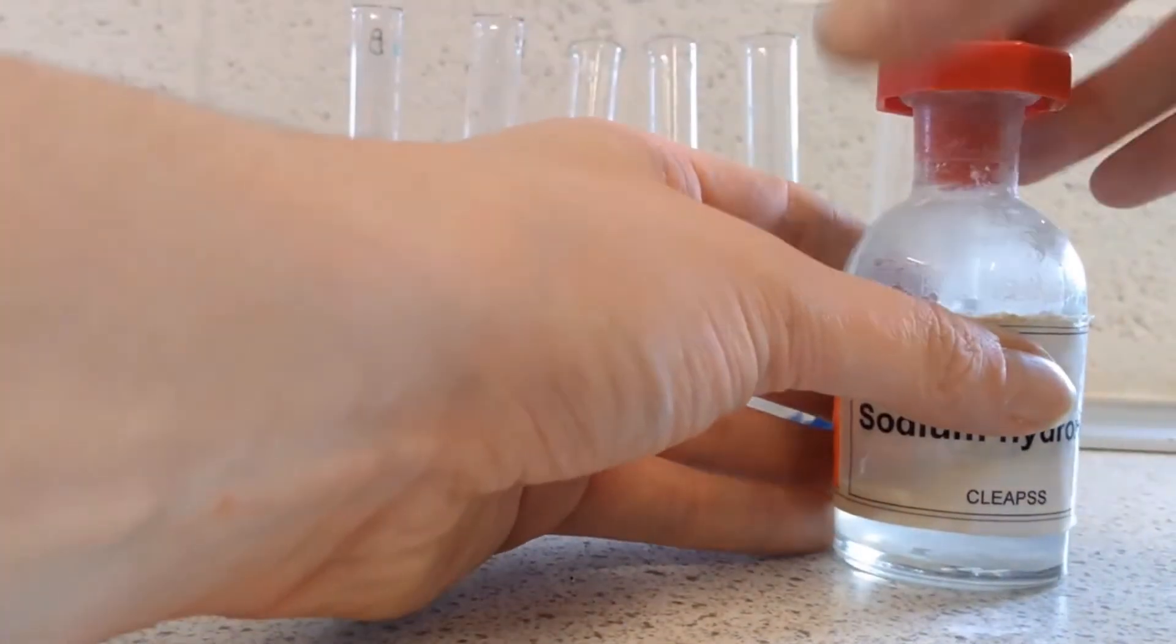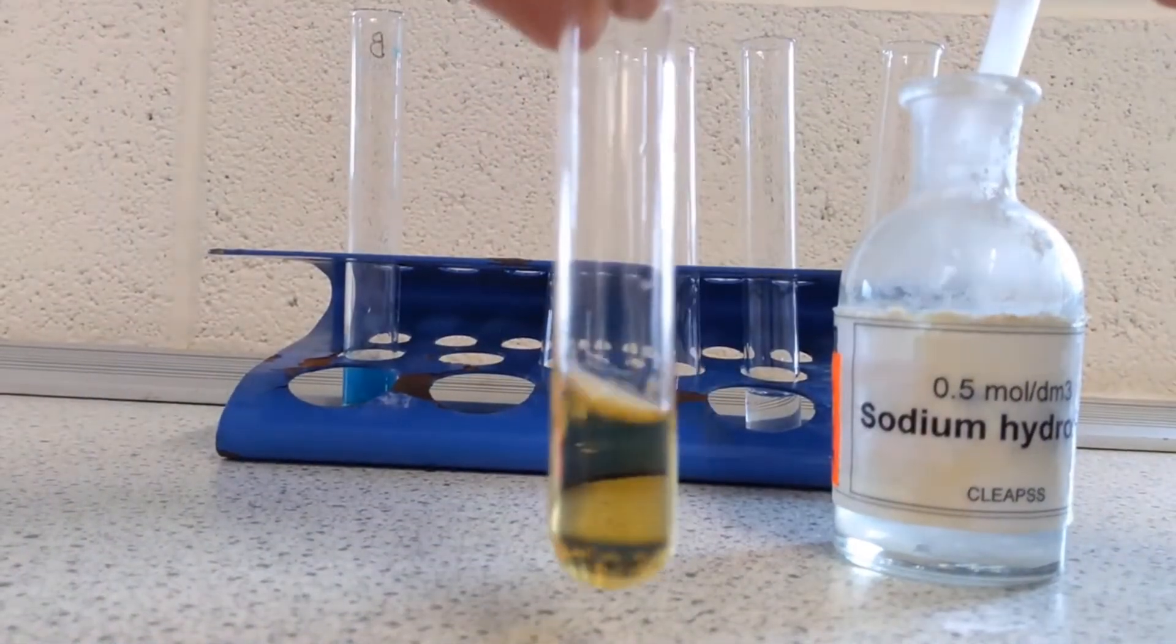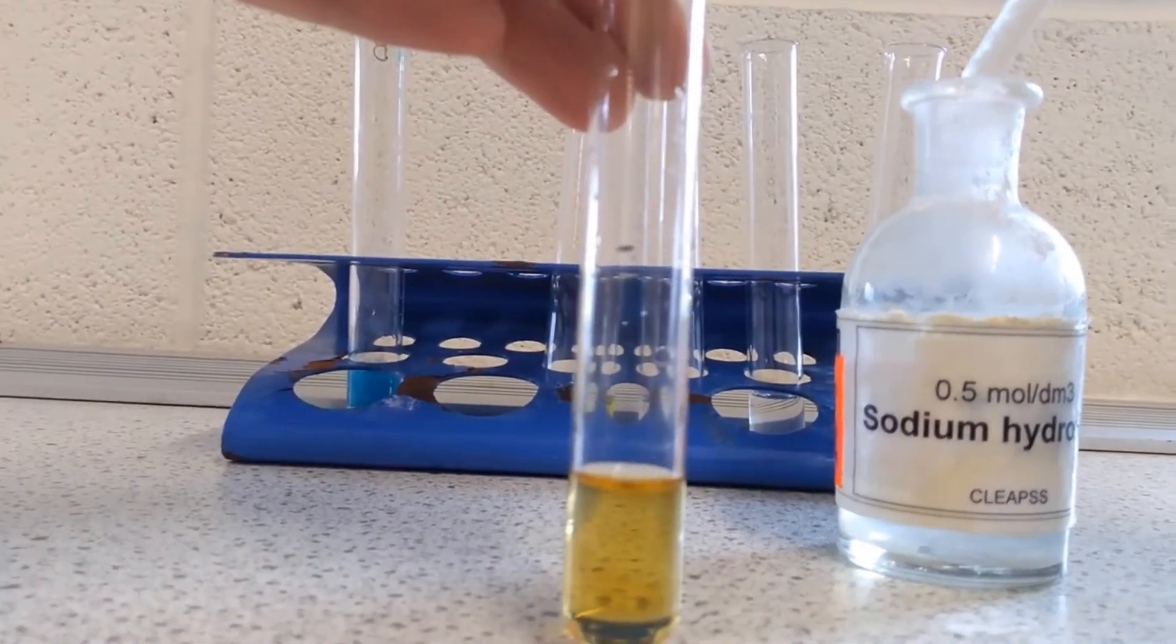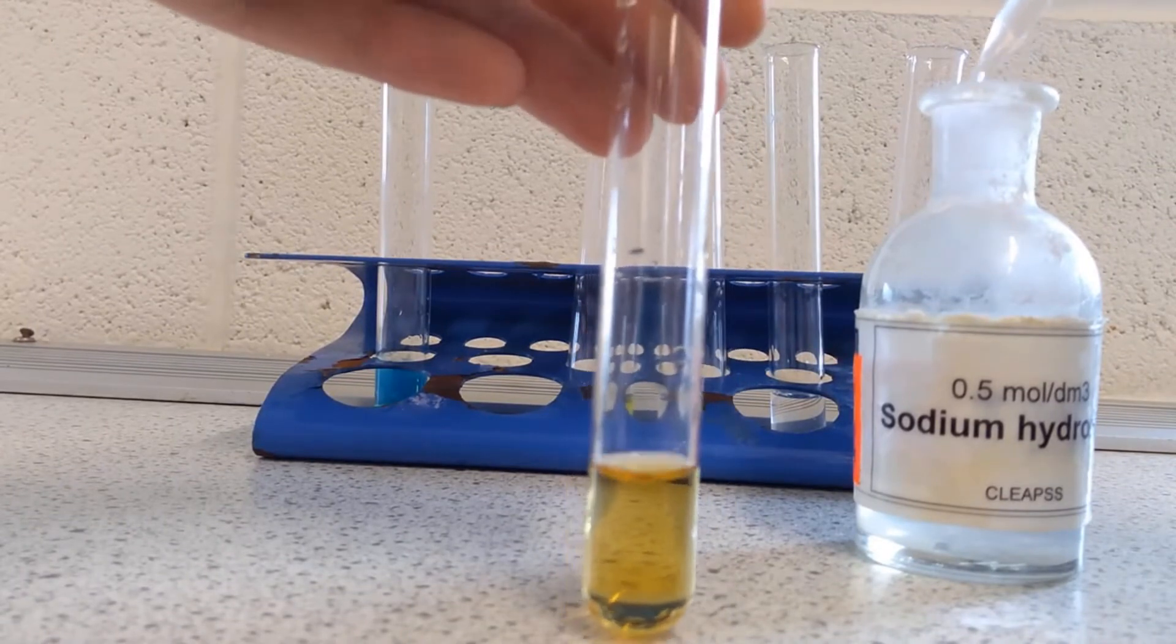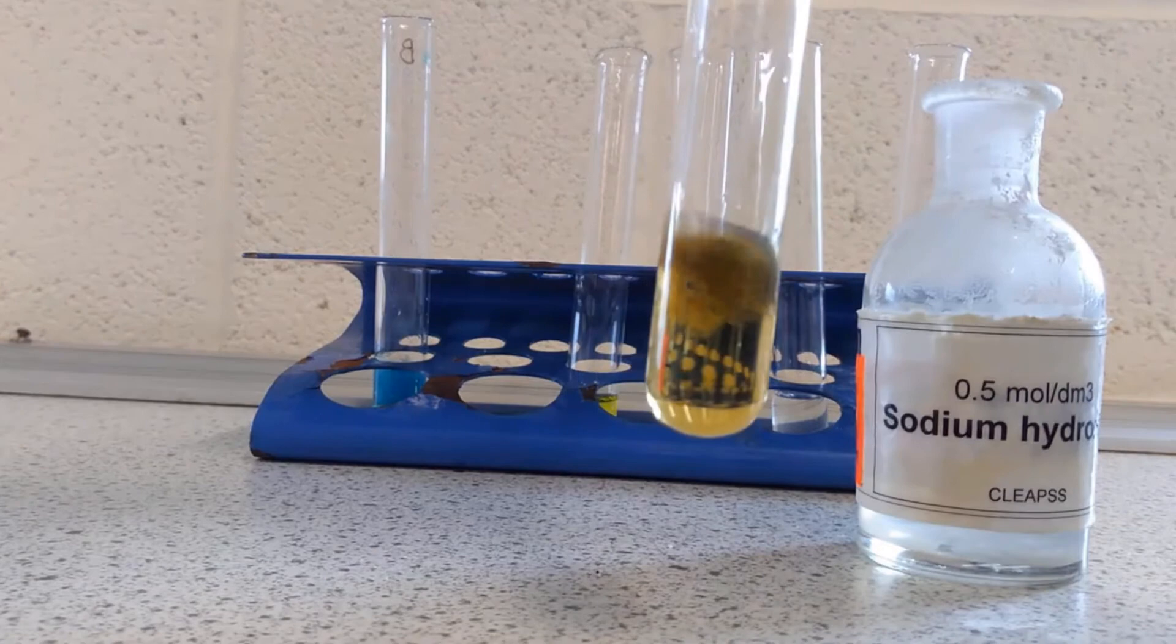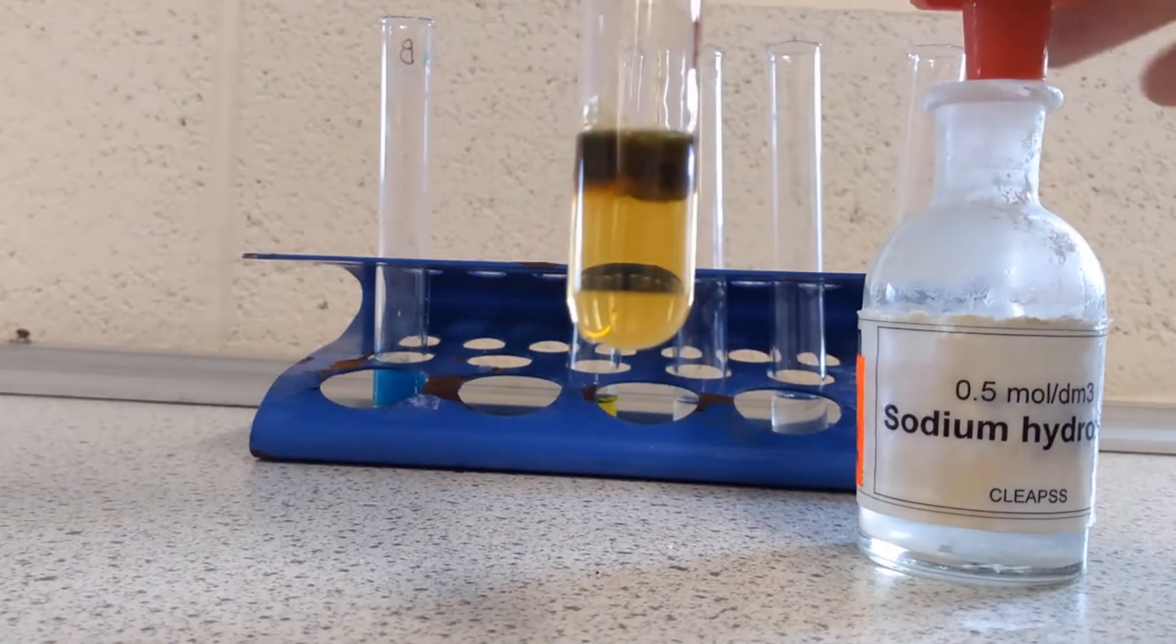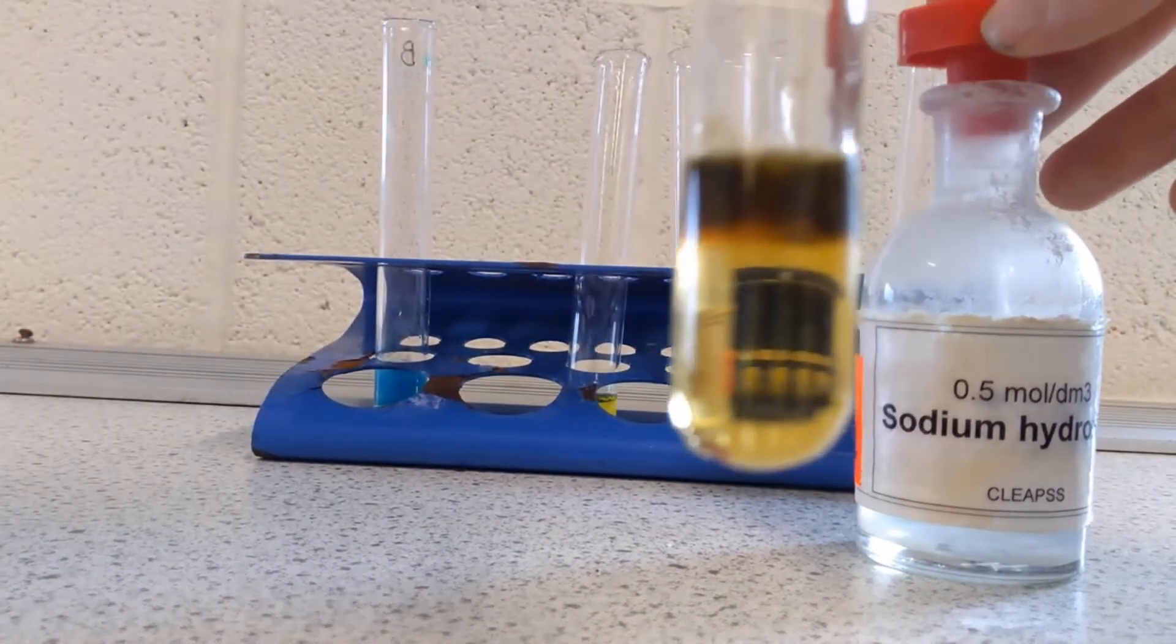And then likewise this next one is iron 2 plus ions, because remember, iron being a transition metal has multiple stable ions, so these are the iron 2 plus ions, and they produce this characteristic dark green colour.